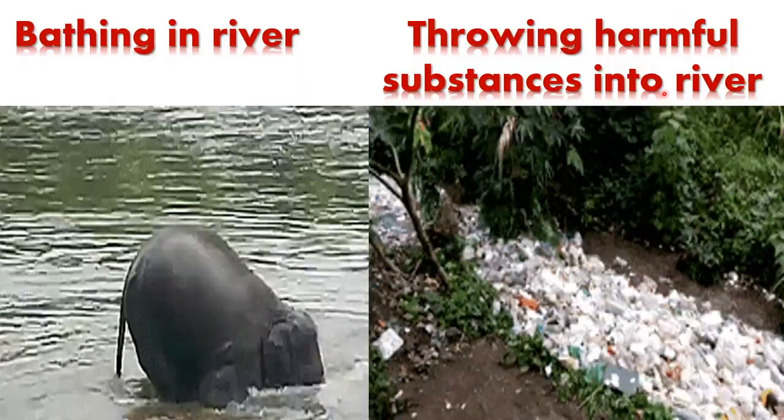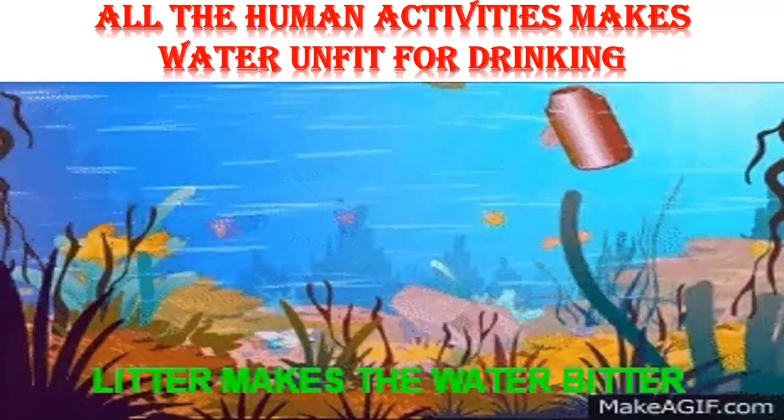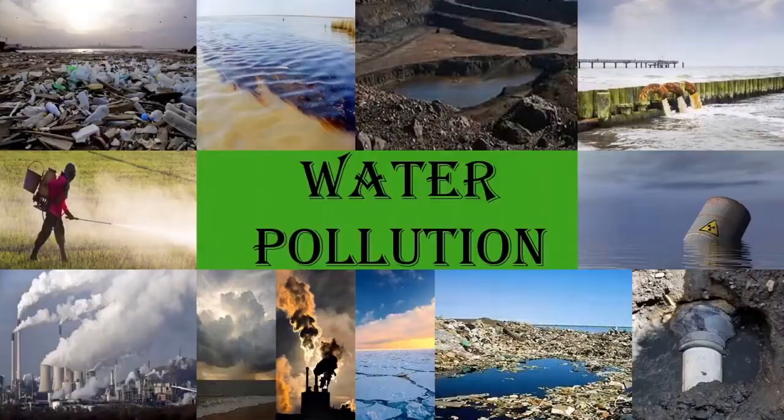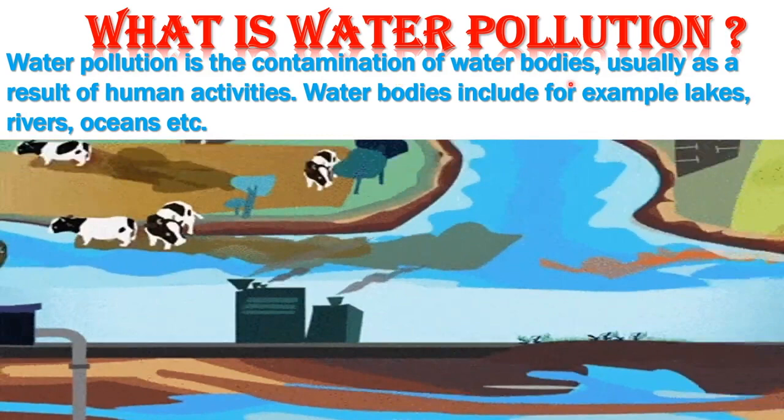All human activities make water unfit for drinking. Litter makes the water bitter. Water pollution is the contamination of water bodies, usually as a result of human activities. Water bodies include, for example, lakes, rivers, oceans, etc.